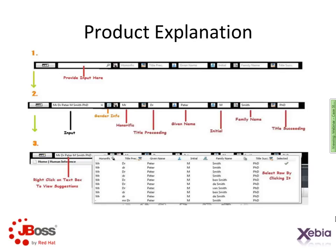Before going into the implementation, let me describe the product briefly. The product is about data cleansing — specifically name cleansing. It takes any string and determines whether it is a valid personal name or a company name, and provides details about the different parts. It also tells whether the name is male or female and where it is found in the world, along with different forms in which it can be written.